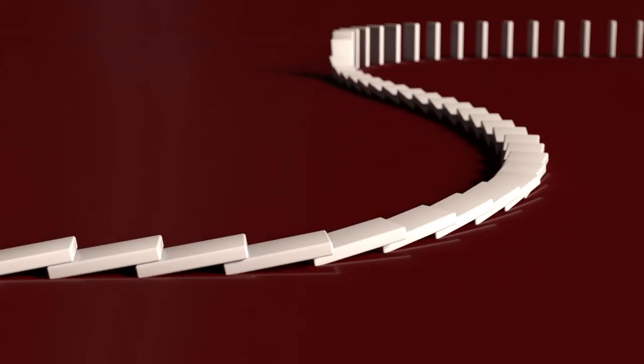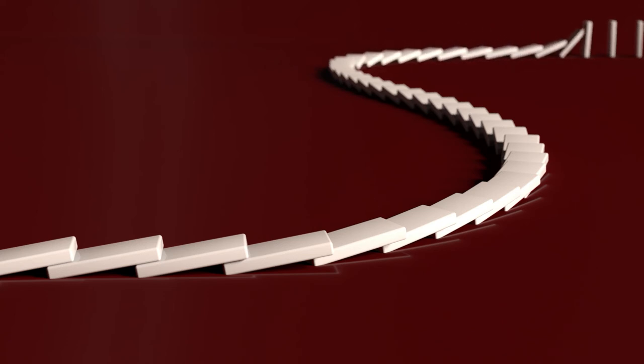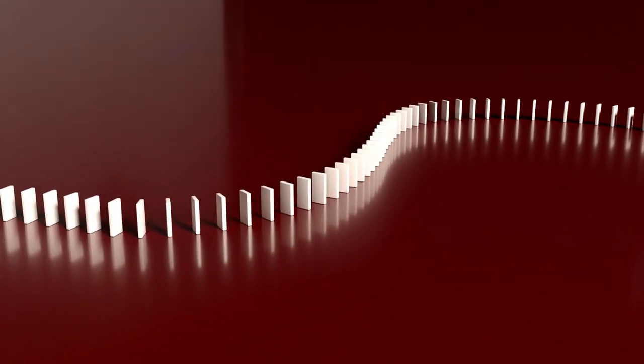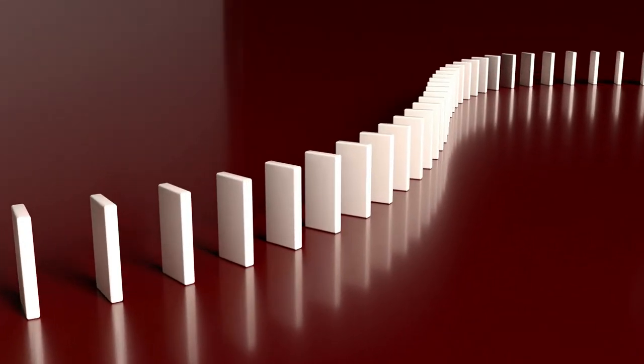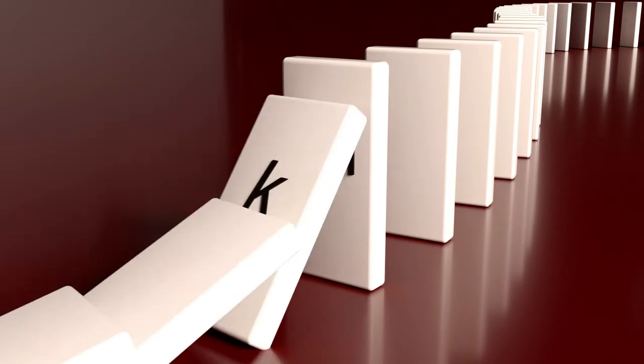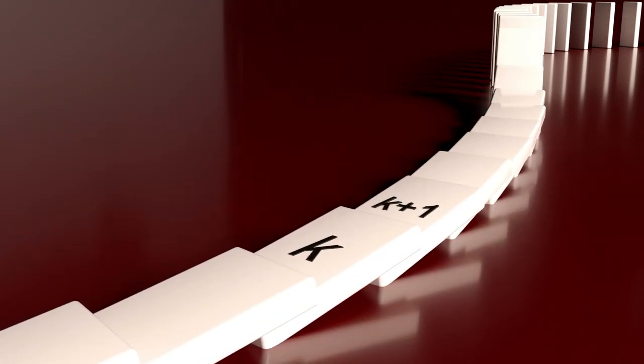And when the third domino falls, it will cause the next one, number 4, to fall. And we see that this process must continue for all the dominoes. This is because we have placed each domino so that whenever domino k falls, it will cause domino k plus 1 to fall as well.